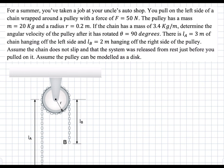In this question, there's a pulley with a chain. You're pulling on the chain with a force of 50 newtons, and you're asked to find the final angular velocity after a rotation of 90 degrees, assuming everything starts from rest. This is a work-energy problem, so we're going to define two states: the initial state and the final state.